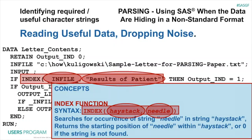We're also going to use the index function to search for the string we want to keep. We are going to search for a needle in a haystack. Index is going to return the starting position of wherever it finds that string within the full string called haystack. It will return a zero if the string is not found. And as you can see in the code, we are defining this with an if statement, using SAS's internal 1/0 representation for true/false.